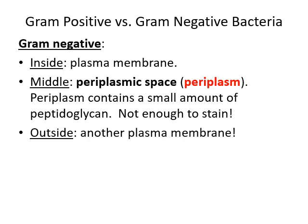Gram negative bacteria are different. They have a plasma membrane on the inside and another plasma membrane on the outside — two layers. Each of those plasma membrane layers is made of a phospholipid bilayer, so there are actually four layers of phospholipids in a gram negative bacterium, forming two phospholipid bilayers with a space in between.